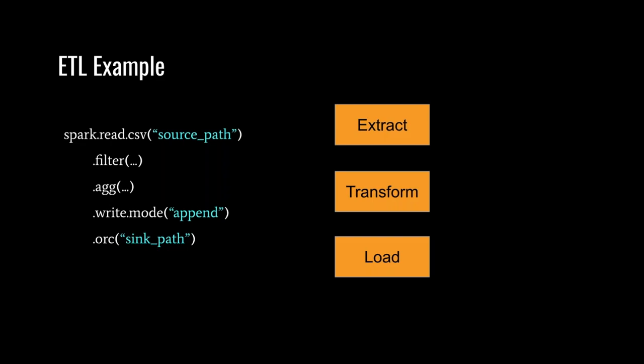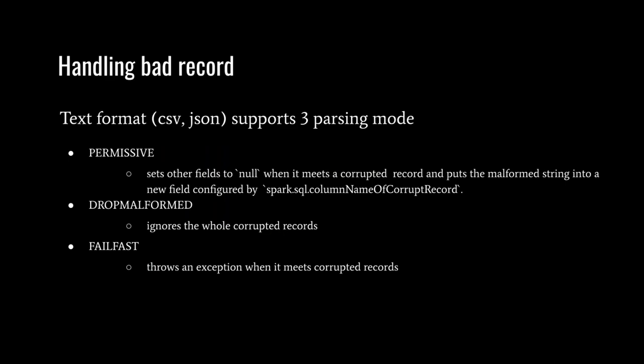Here is a simple code snippet about writing an ETL job in Spark. We read CSV data, do filtering and aggregation, and finally load it into ORC format. This is how we do ETL in Spark. The Spark API is pretty user-friendly and easy to use. One important thing that new data engineers often forget is handling bad records — you cannot assume data is always in the right format you expect, as it is pretty normal for data to be corrupted.